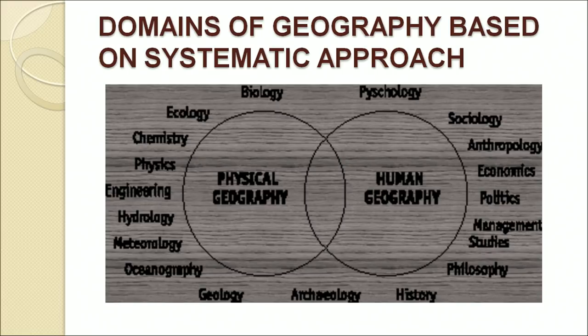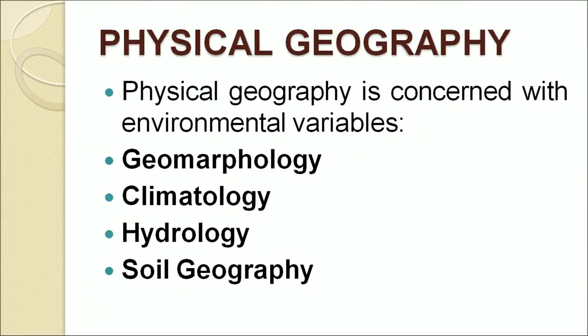Human geography is more concerned with the social sciences like sociology, anthropology, economics, politics, philosophy and history. Physical geography is mainly concerned with environmental variables like soil, climate, lands, etc. On the basis of these environmental variables, we can subdivide physical geography into the following divisions.